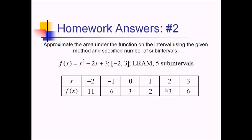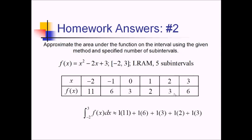Since this is LRAM, we're going to start with the left endpoint here, the left y value. So we have a base of 1 times a height of 11, and this is the integral from negative 2 to 3 of f of x, and we are approximating that. So we've got base of 1 times height of 11, plus base of 1 times a height of 6, base of 1 times a height of 3, 1 times 2, plus 1 times 3. Adding these together: 17, 20, 22, 25.